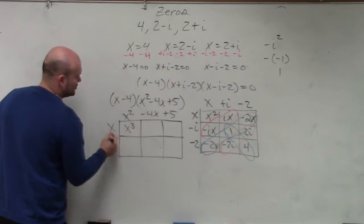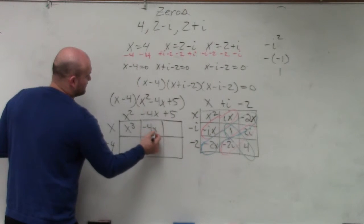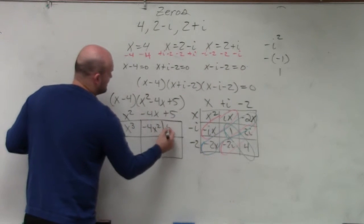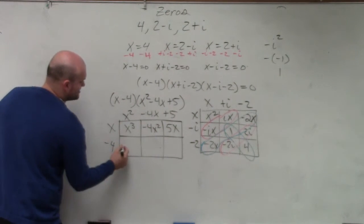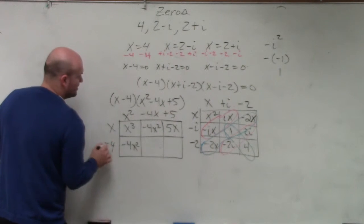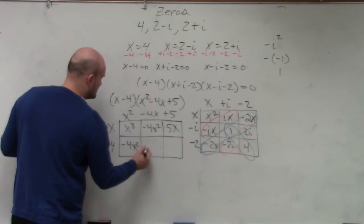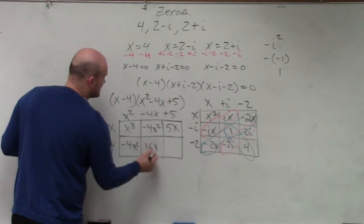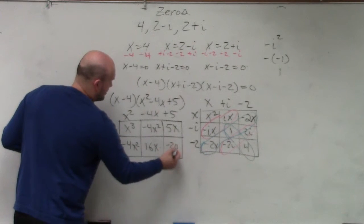x times x squared is x cubed. x times negative 4x, negative 4x squared. x times 5, 5x. x squared times negative 4, negative 4x squared. Negative 4 times negative 4x is going to be a positive 16x. 5 times negative 4 is negative 20.